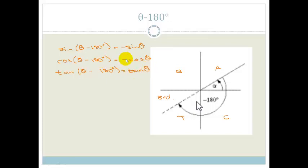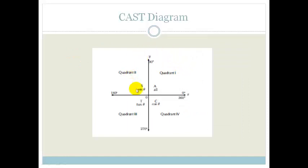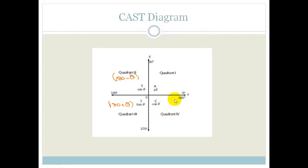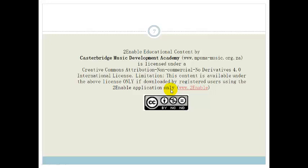The only tricky thing is to realise that theta minus 180 degrees means we're going clockwise around. So you need to make sure you go in the right direction to end up in the right quadrant. To confirm using the CAST diagram: quadrant 1 — everything is positive; quadrant 2 — only sine is positive; quadrant 3 — only tan is positive; quadrant 4 — only cos is positive. This covers everything for 180 minus theta and 180 plus theta. We will talk about the other quadrants in the next lesson. And that, Grade 11, is the reduction formula with respect to 180 plus or minus theta. Have a lovely day.